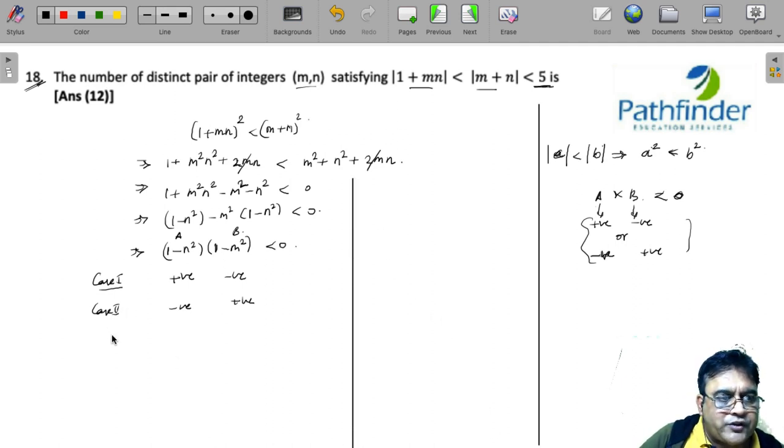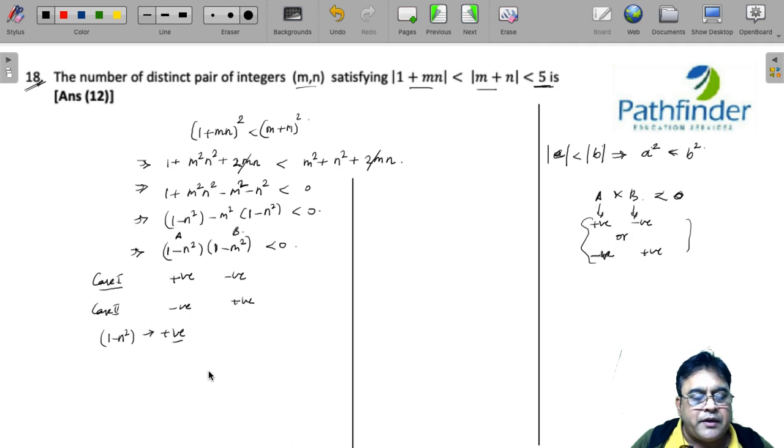Let us take case 1 first. It means 1-n² is positive. Since n² cannot take any negative values and m, n are integers, n can take values like 0, 1, 2, 3 and so on.